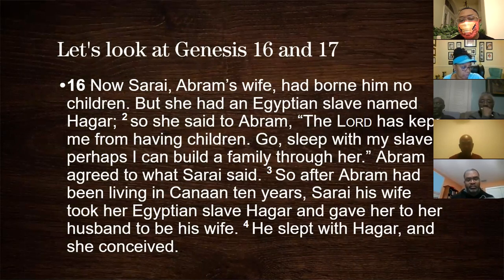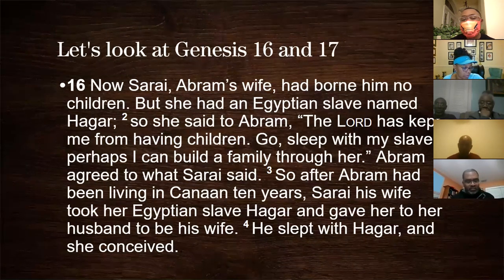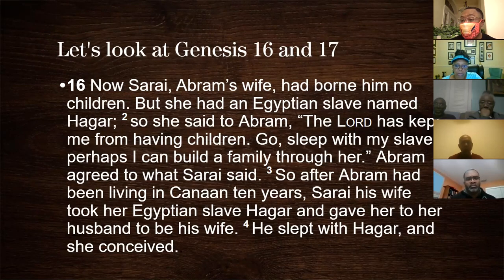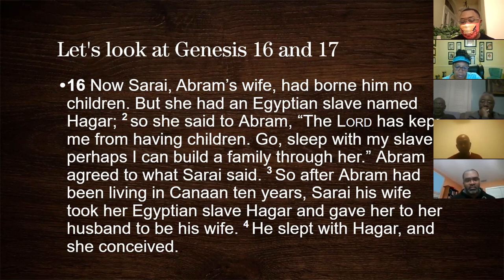Now Sarai, Abram's wife, had borne him no children, but she had an Egyptian slave named Hagar. So she said to Abram, 'The Lord has kept me from having children — go sleep with my slave; perhaps I can build a family through her.' Abram agreed. After Abram had been living in Canaan ten years, Sarai took her Egyptian slave Hagar and gave her to her husband to be his wife. He slept with Hagar and she conceived.